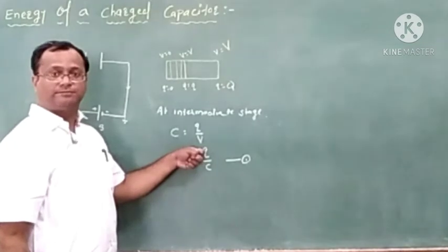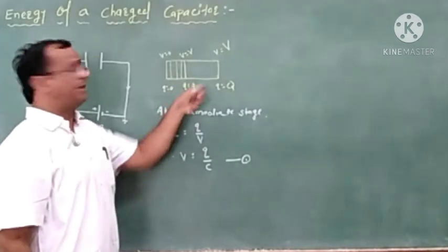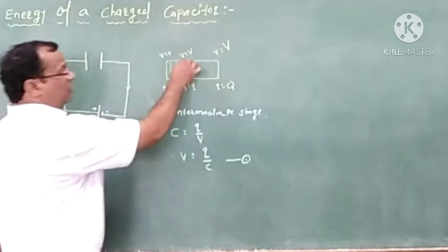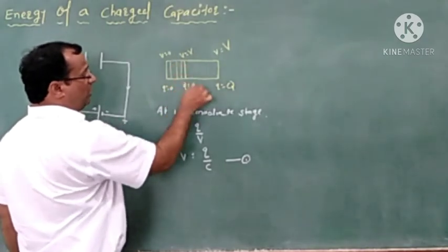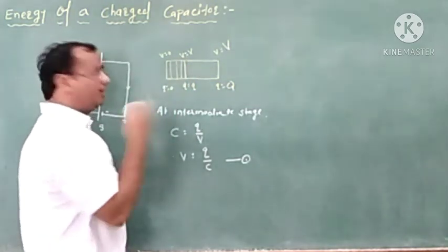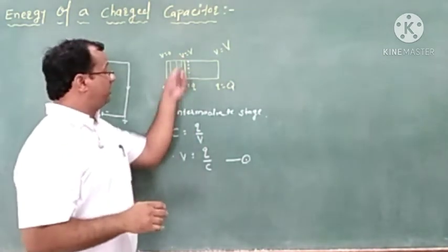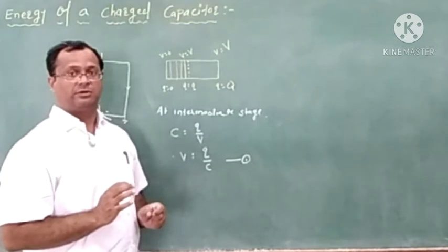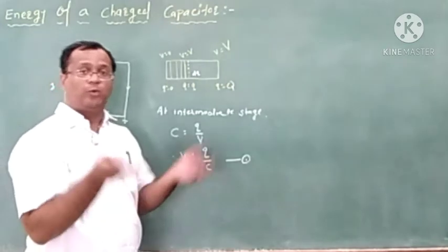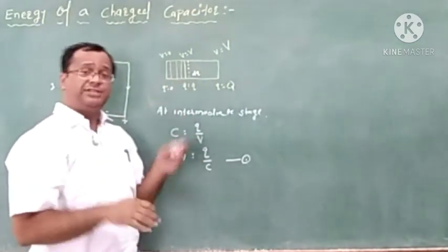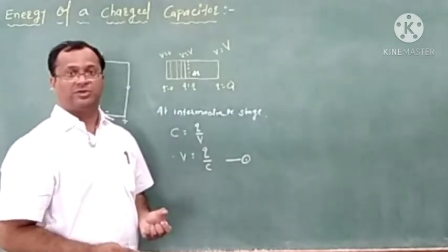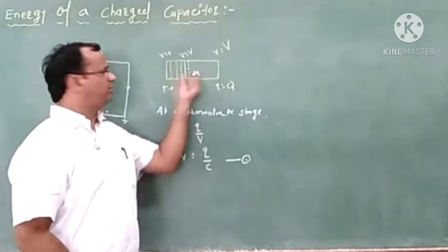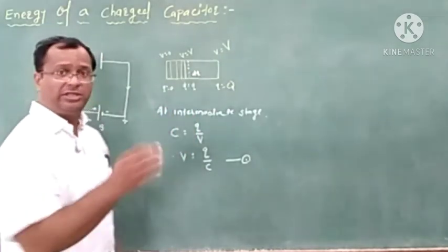At this stage, the number of charges is small q. Our target is to fill this capacitor up to 100%, up to charge capital Q. But what happens — the few charges already existing inside the capacitor produce their electric field, and that field opposes any new incoming charge. The new charge here is dQ.